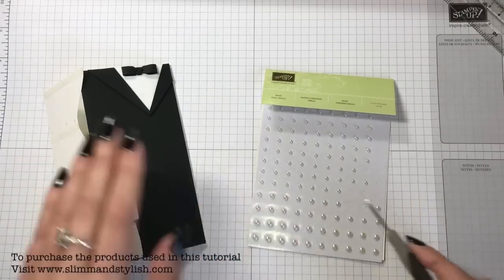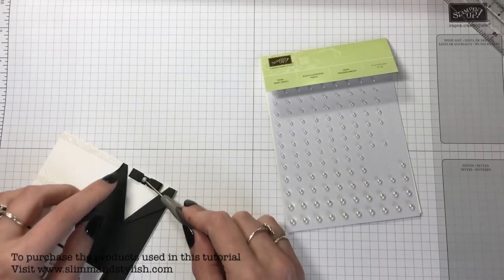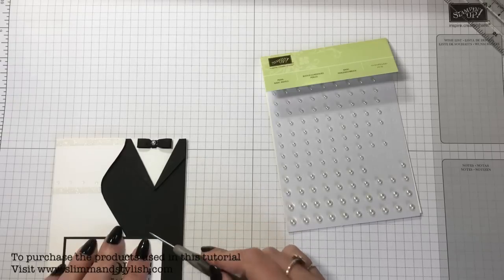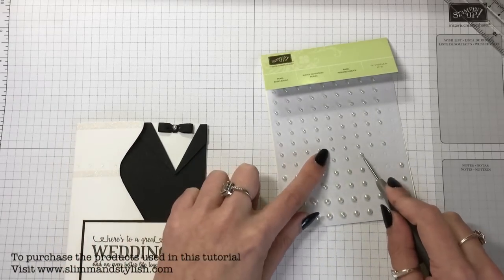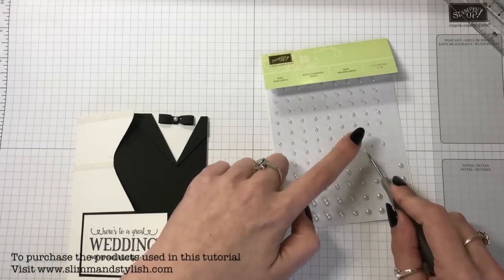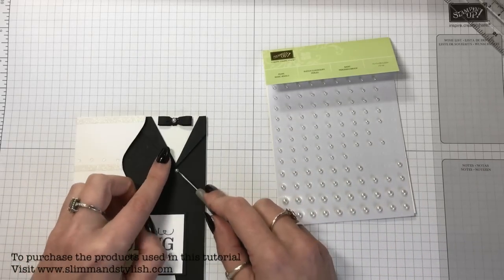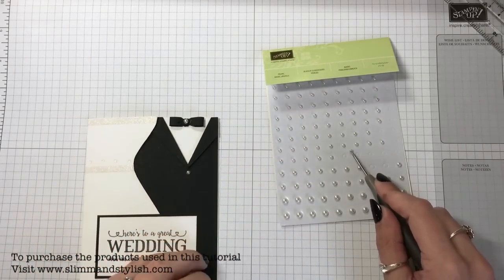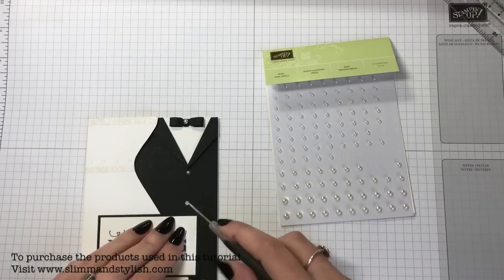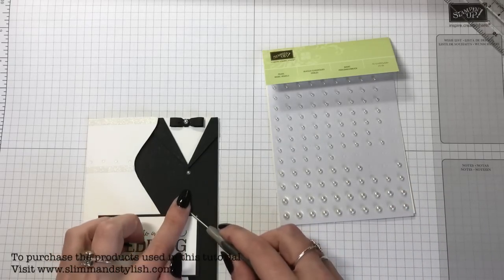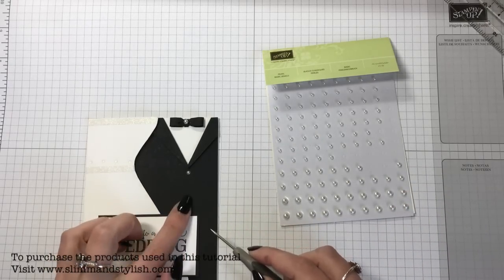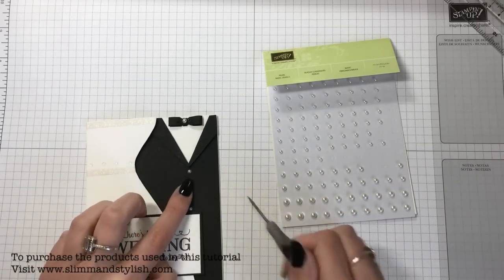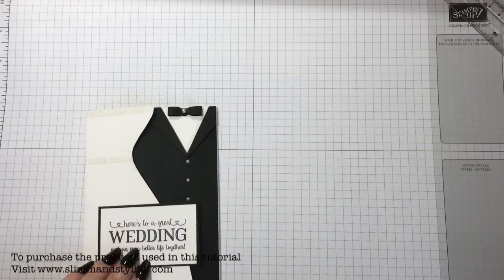And then the pearl, I used a medium sized pearl on the bow tie at the top. And then just down here I put three pearls of the little size. So I started one at the top directly under the collar, one directly against the sentiment, and then one in the middle. And there you go.